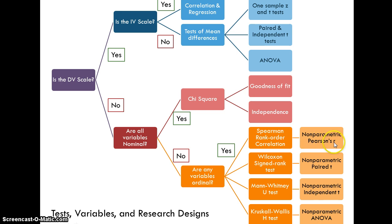the Spearman is a non-parametric version of the Pearson's correlation coefficient. The Wilcoxon signed rank is a non-parametric version of the pair T test. The Mann-Whitney U is a non-parametric version of the independent samples T. And the Kruskal-Wallis H is a non-parametric version of the analysis of variance.